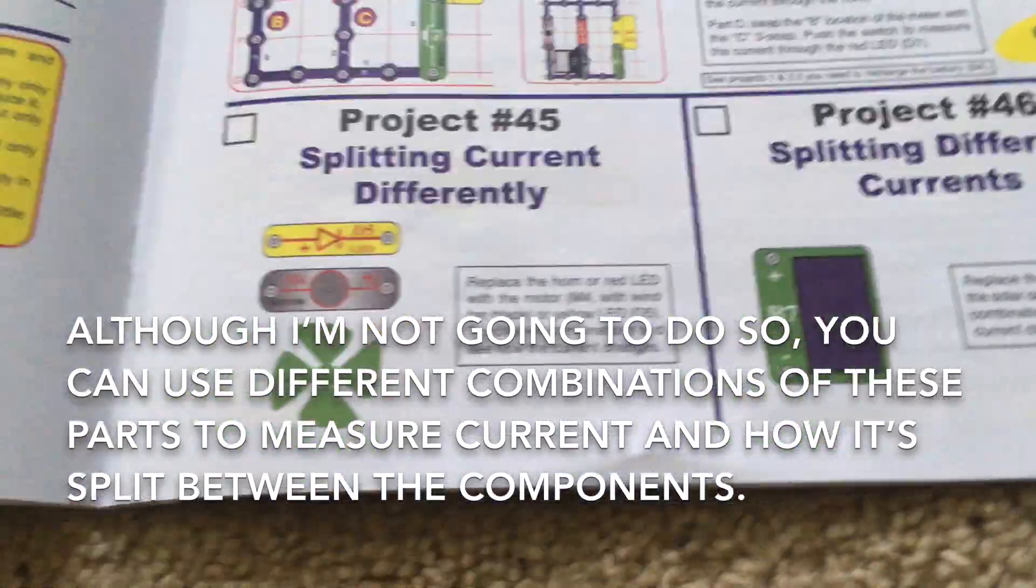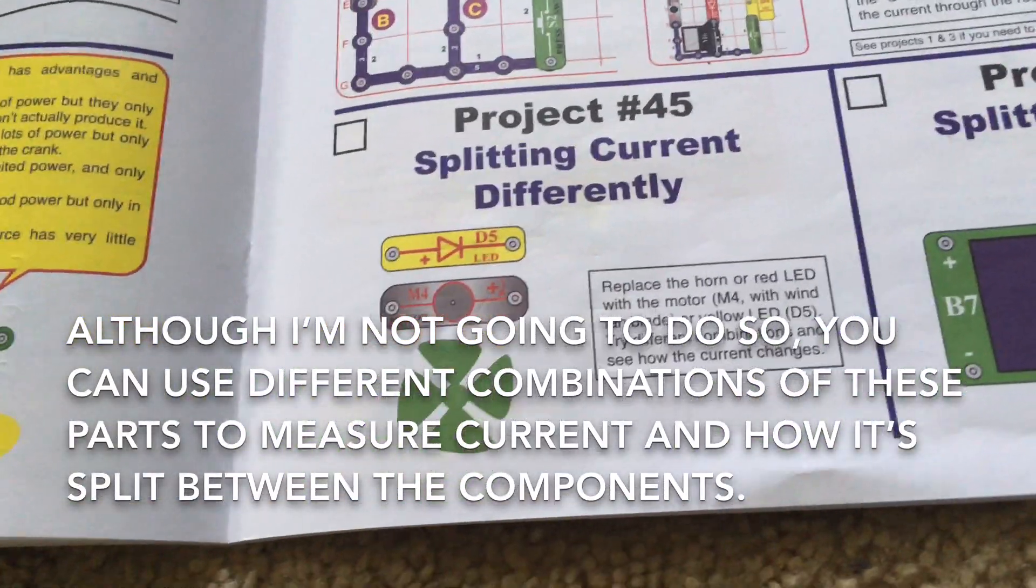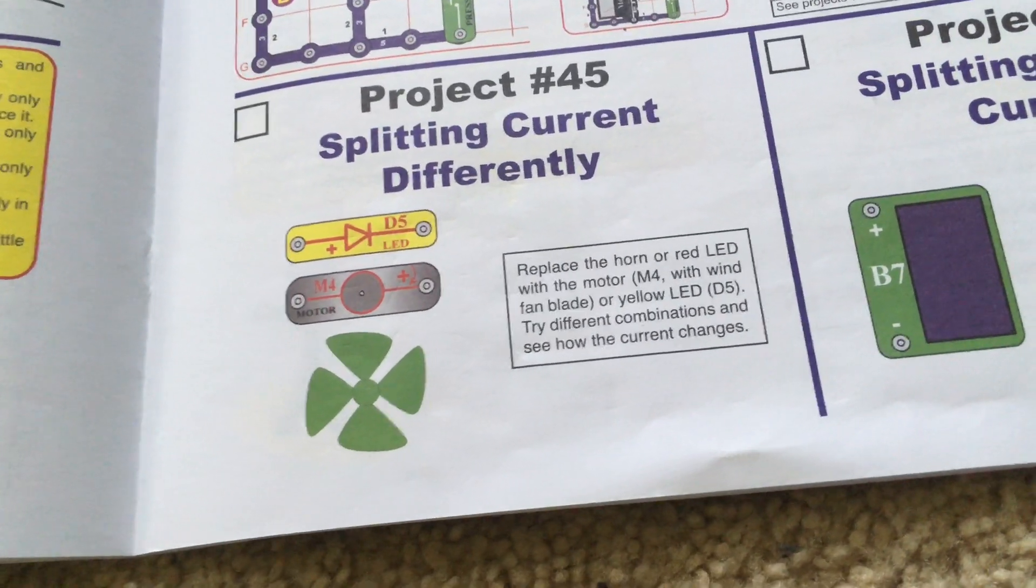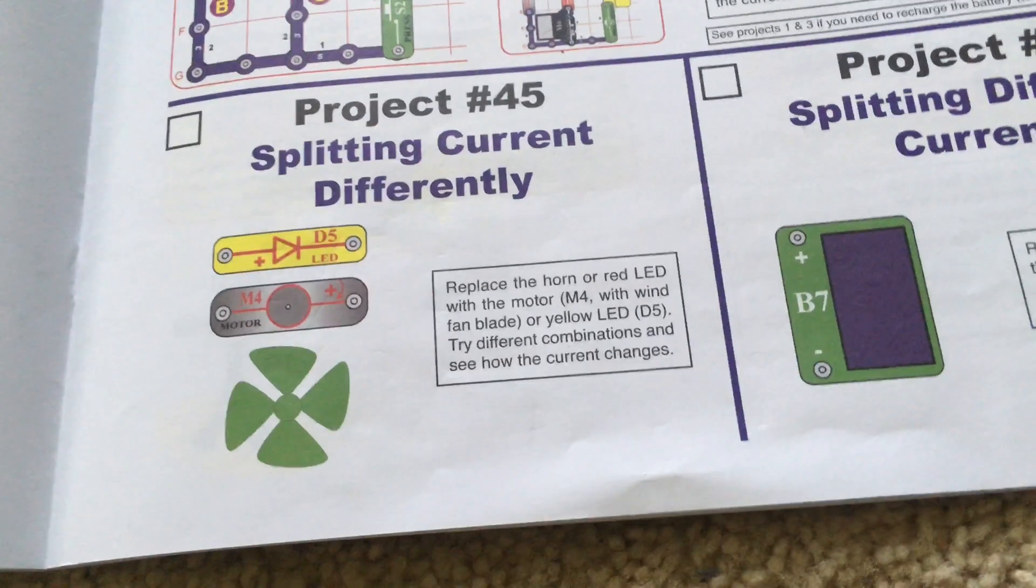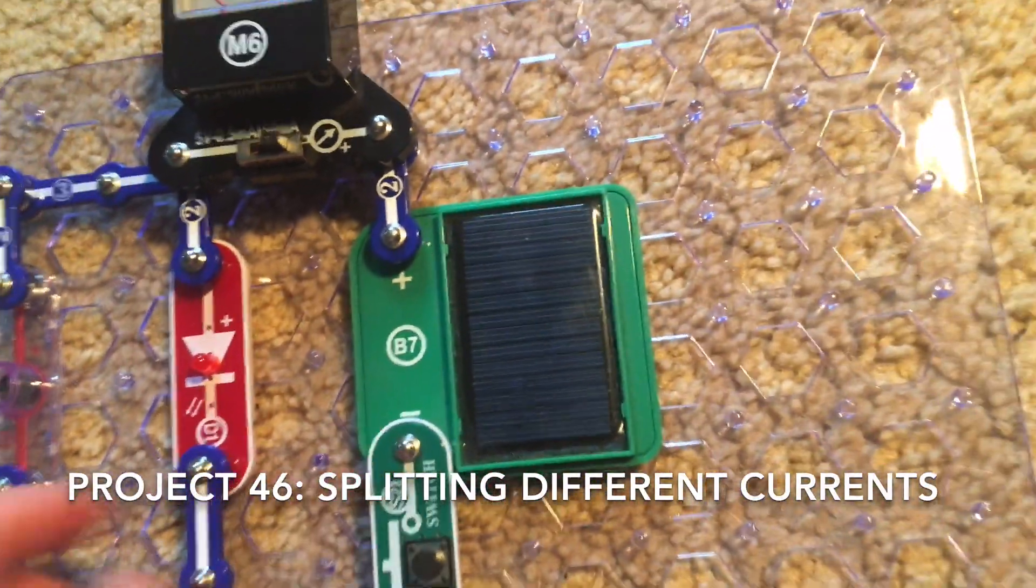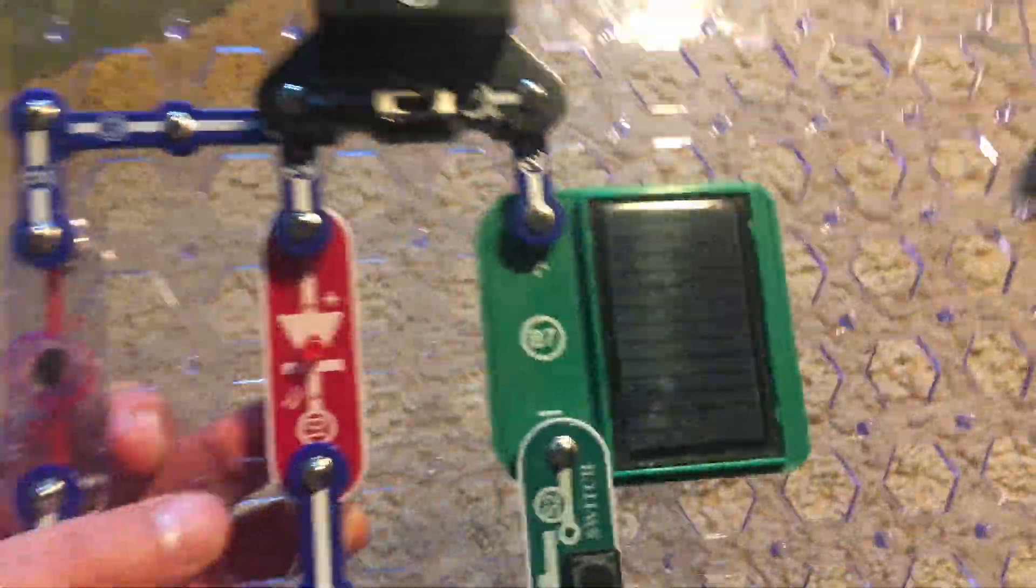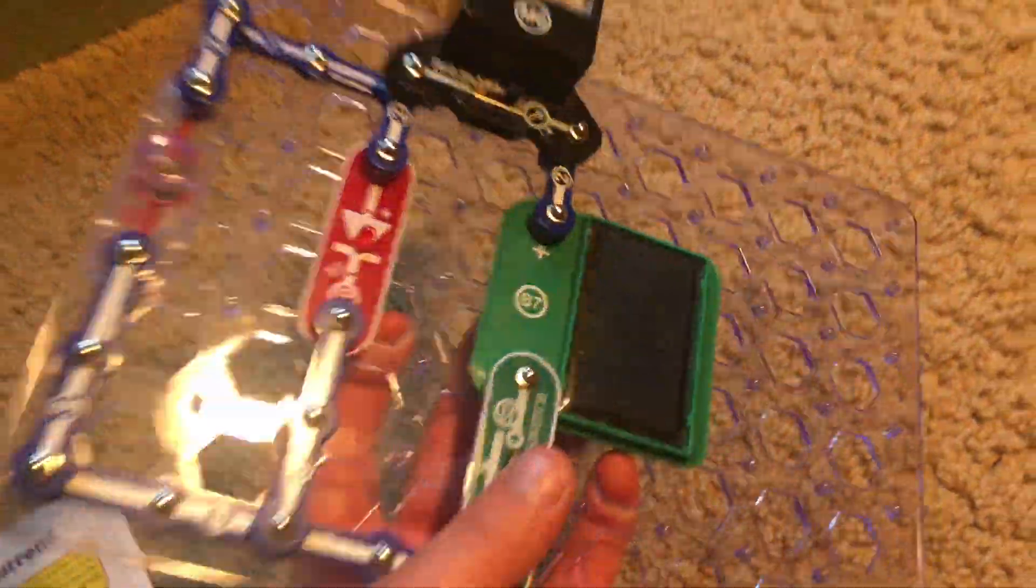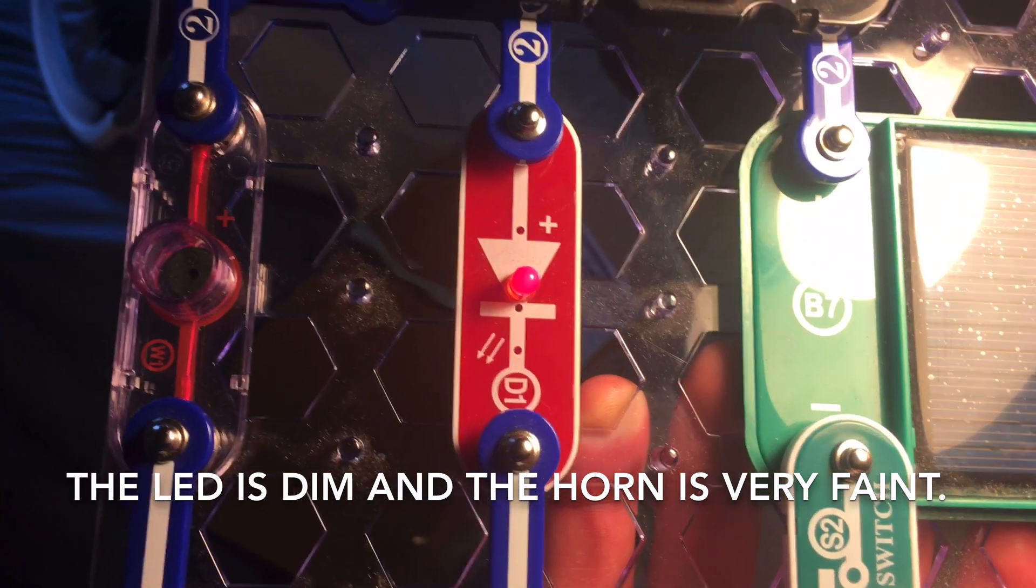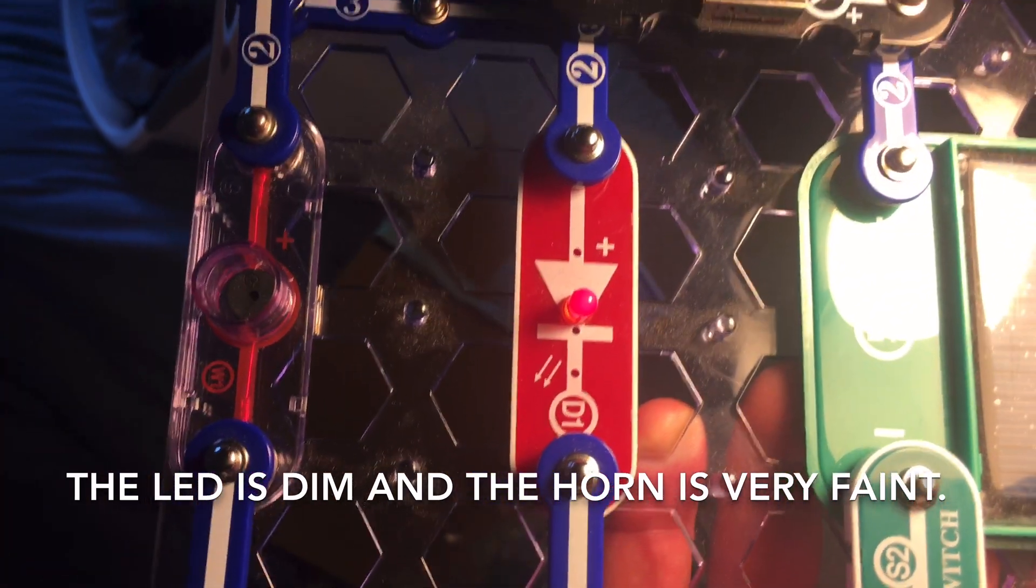Although I'm not going to do it, you can use different combinations of these parts to measure the difference in current and how it is split. Project 46 involves replacing the rechargeable battery with the solar cell. We're going to use the horn and red LED. I'm going to use this desk lamp. And the LED comes on and the horn is very faint. The LED is very dim.